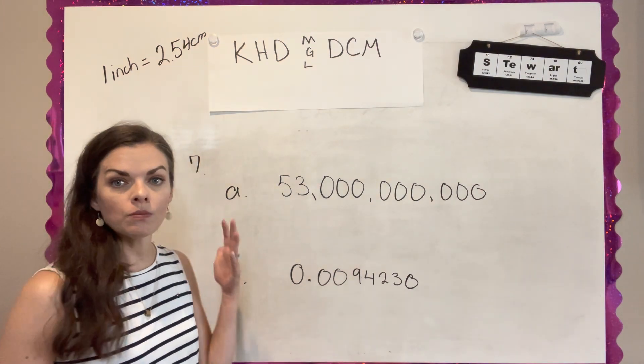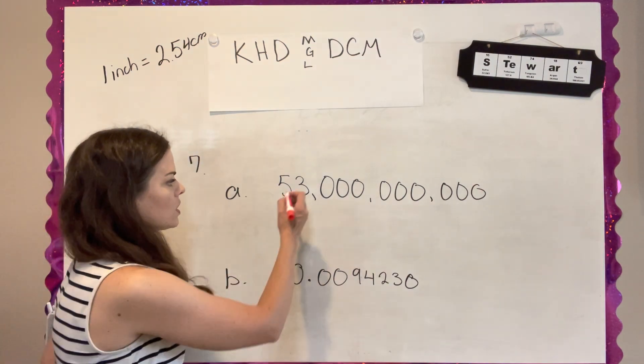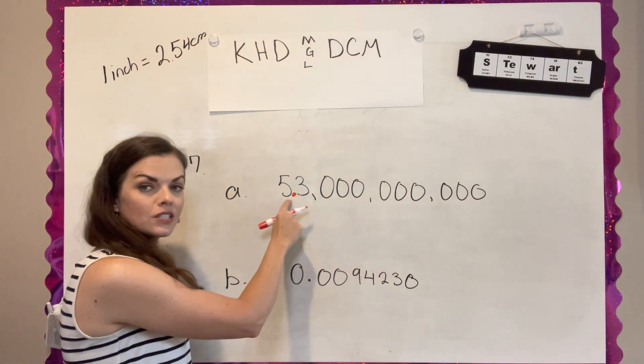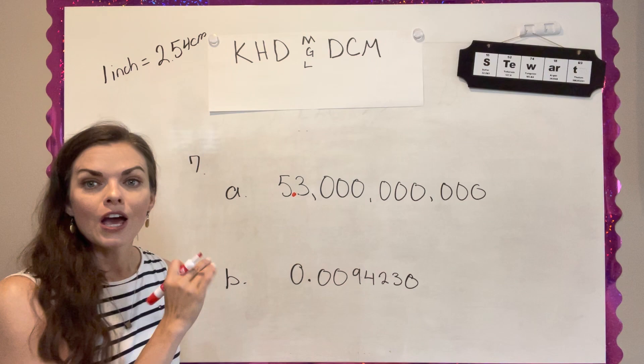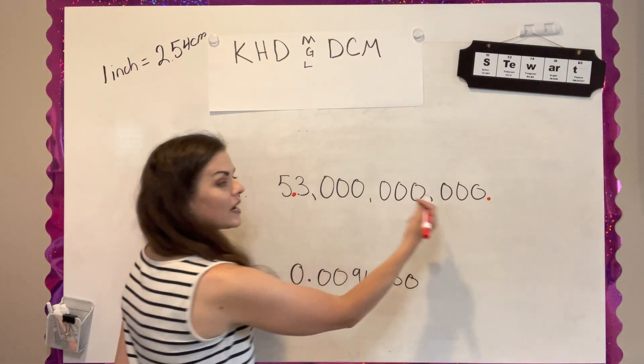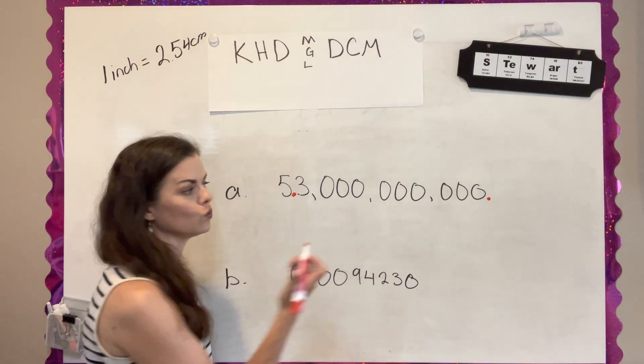And so I'm going to rewrite this number so that the decimal point is right here. That would put just the five to the left. Well, in order for that to happen, my decimal is here and I have to move it. So let's count how many times it has to move.